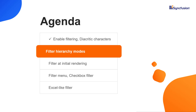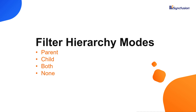Let me show you the filter hierarchy modes in the Angular TreeGrid component. TreeGrid supports four filtering modes: parent, child, both, and none. Let's see them one by one.